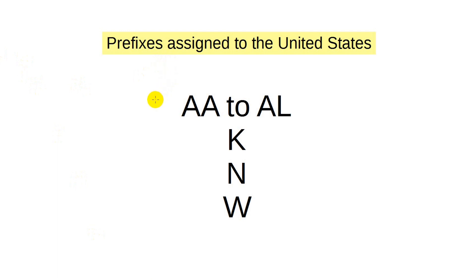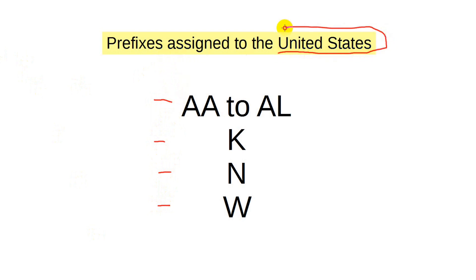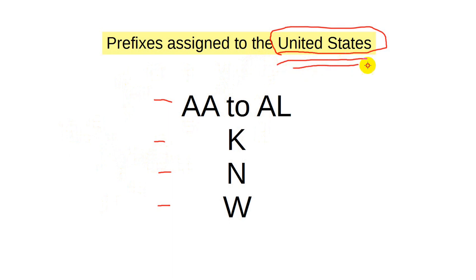All U.S. call signs begin with one of the following four classes of prefixes. These are assigned to the United States by the International Telecommunications Union, or ITU, which is an international organization. In passing, this prefix assignment covers everything in the USA, including radio and television stations and even aircraft identifiers.